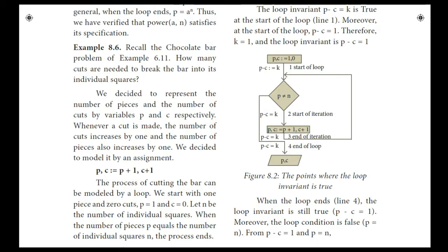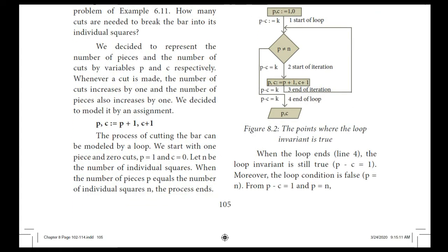The process of cutting the bar can be modeled by a loop. The condition is that all pieces are individual squares. We start with one piece and zero cuts: P = 1, C = 0.